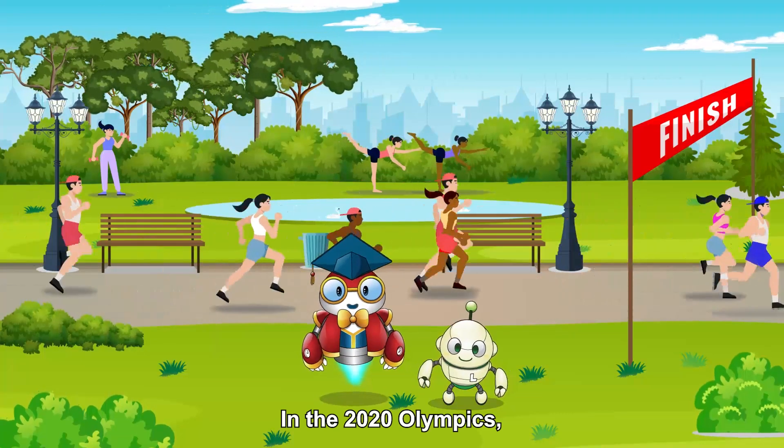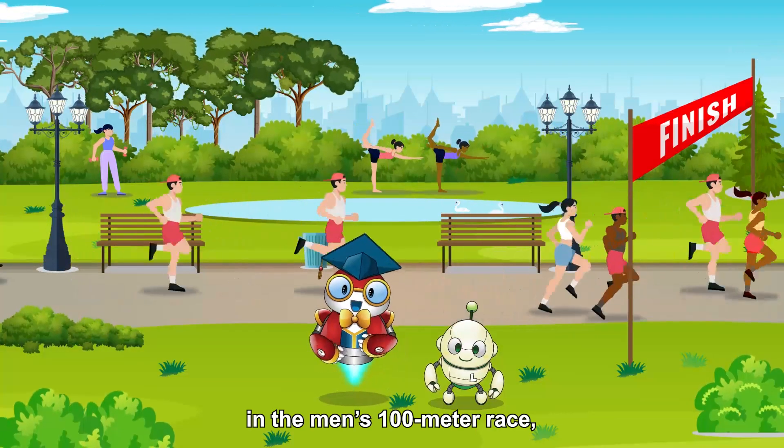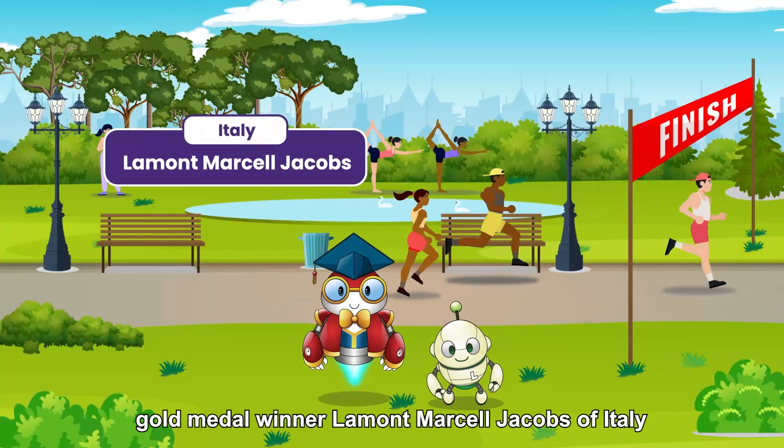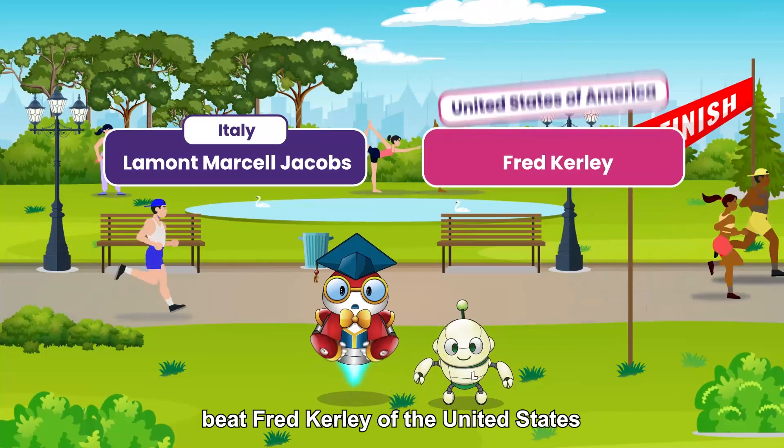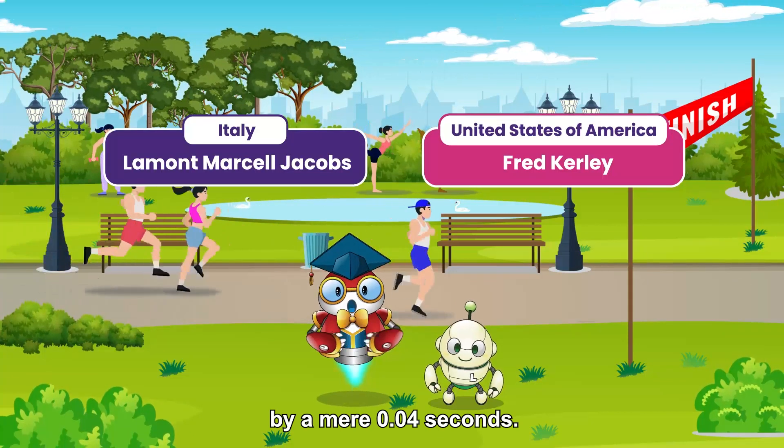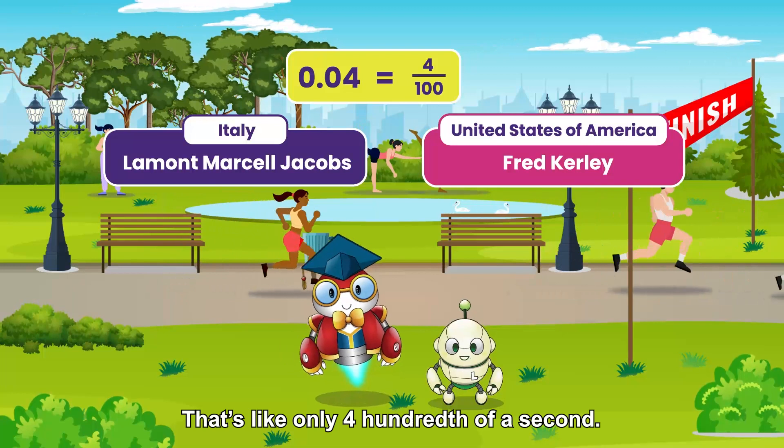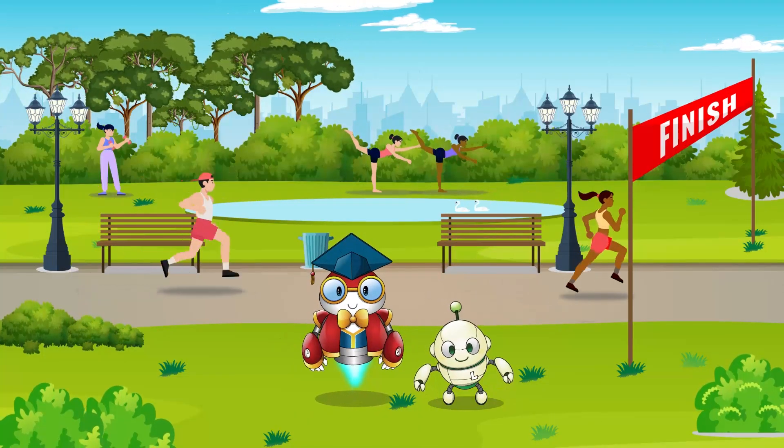In the 2020 Olympics, in the men's 100-meter race, gold medal winner Lamont Marcel Jacobs of Italy beat Fred Curley of the United States by a mere 0.04 seconds. That's like only four hundredth of a second. Wow!